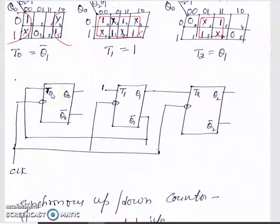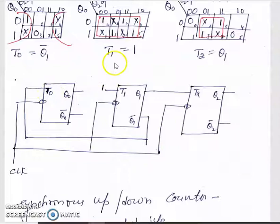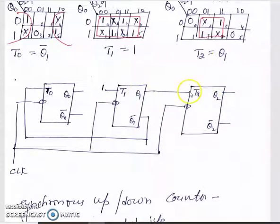From the K-map results: T0 = Q̄1, so Q̄1 is connected to the input T0. T1 = 1, and T2 = Q1, so Q1 is connected as the input to T2. This is the solved problem for RT examinations. Thank you, friends.